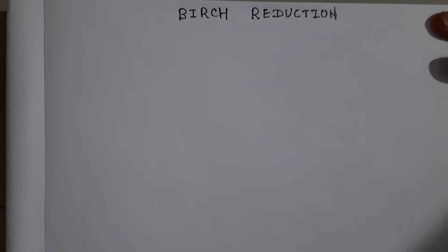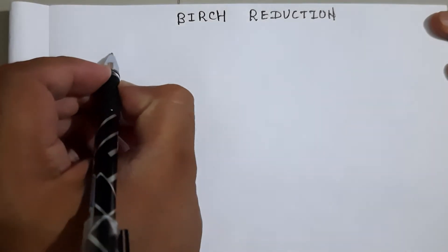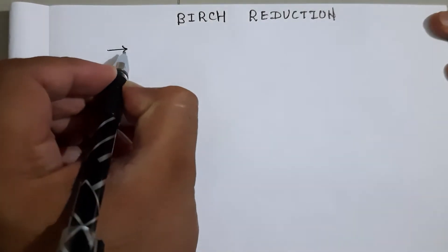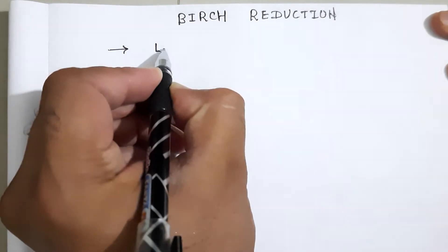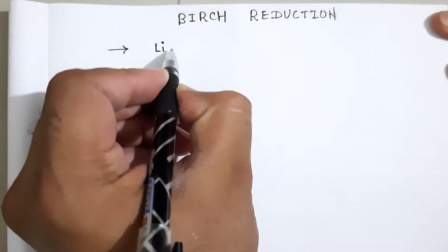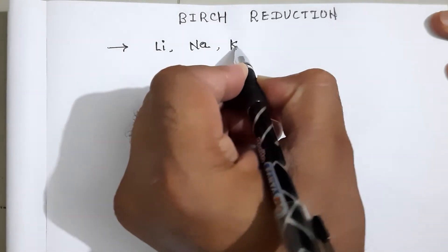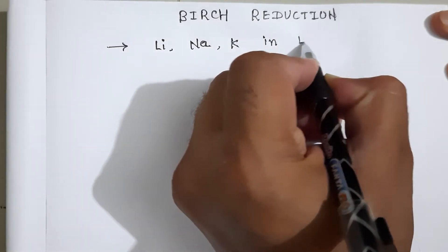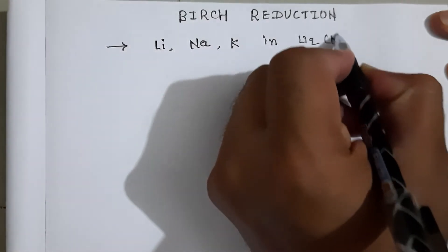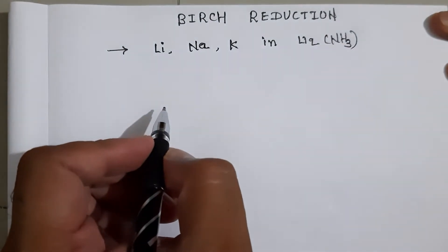Hello friends, today we are going to discuss the Birch reduction. The reagent for the Birch reduction is generally an alkali metal in liquid ammonia. The alkali metals used are generally lithium, sodium, or potassium in liquid ammonia. This is the reagent used in the Birch reduction.